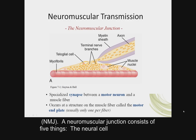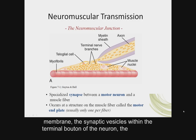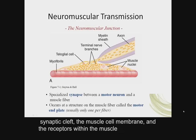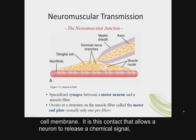A neuromuscular junction consists of five things: the neural cell membrane, the synaptic vesicles within the terminal bouton of the neuron, the synaptic cleft, the muscle cell membrane, and the receptors within the muscle cell membrane.